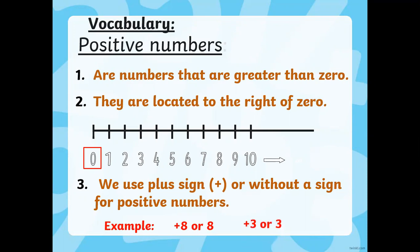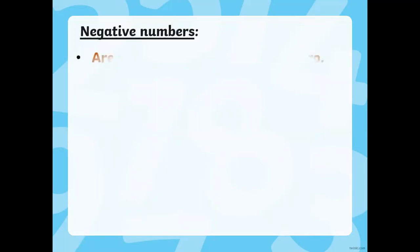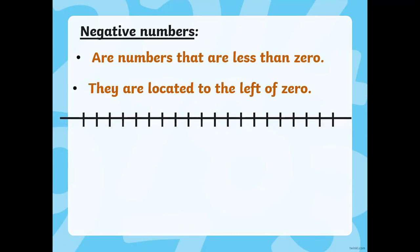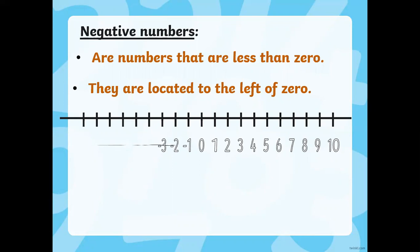Now let's see what exactly negative numbers are. Negative numbers are numbers that are less than zero, and they are located to the left of zero. So if this is our zero, this will be minus 1, minus 2, minus 3, minus 4, minus 5, minus 6, minus 7, minus 8, and minus 9, and so on. It keeps going to the left side of zero, just like positive numbers keep growing on the right side of zero.